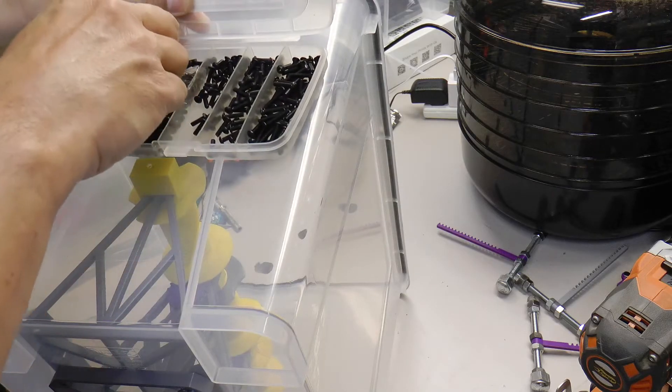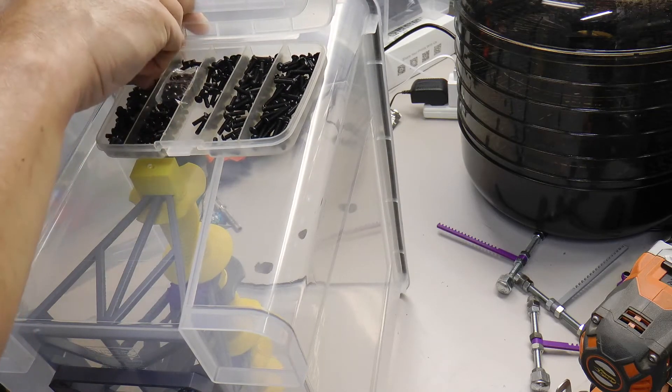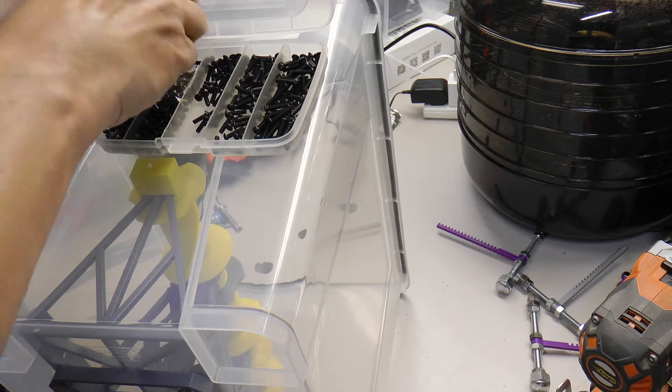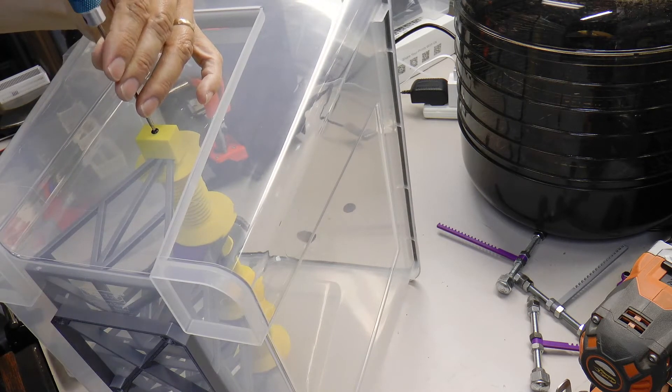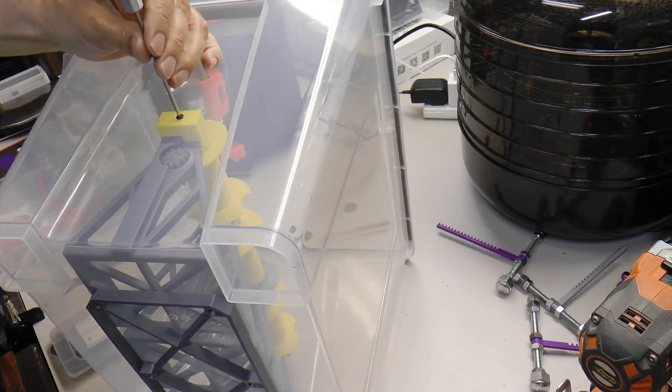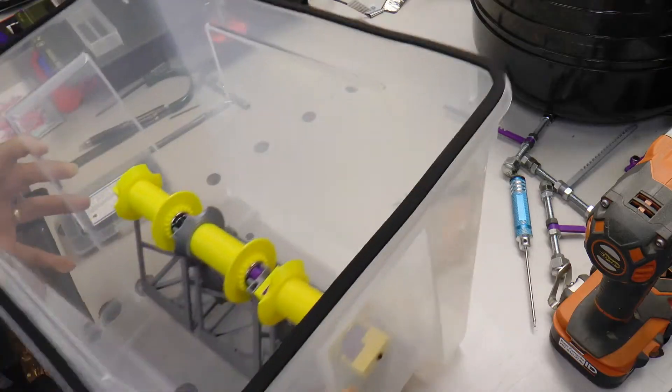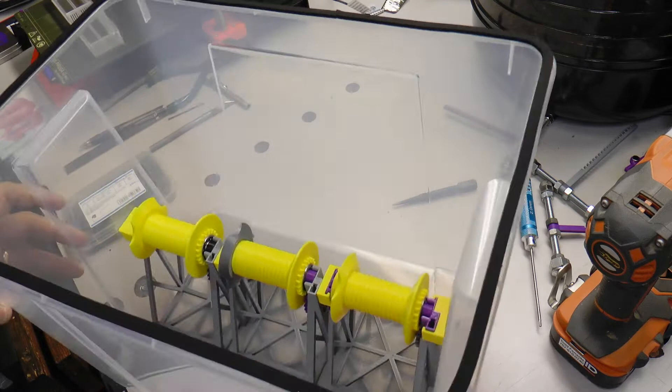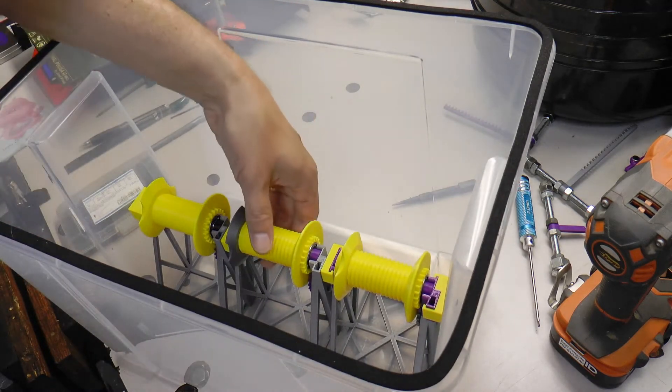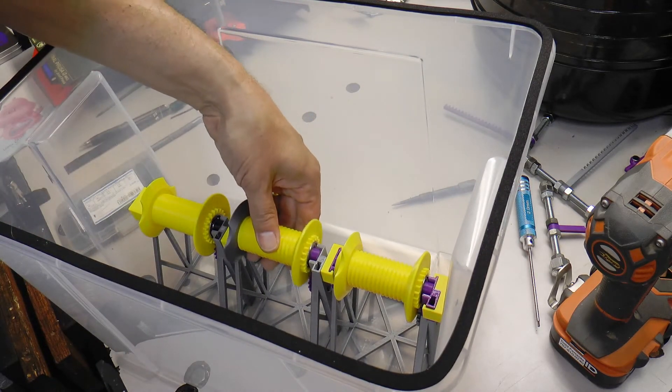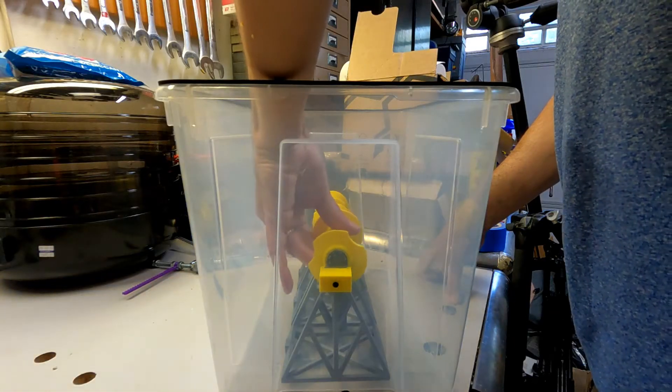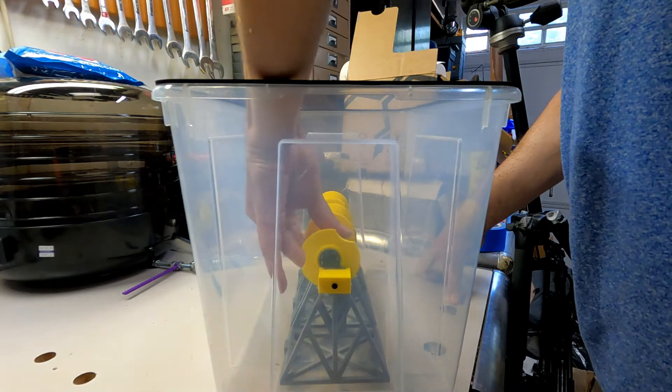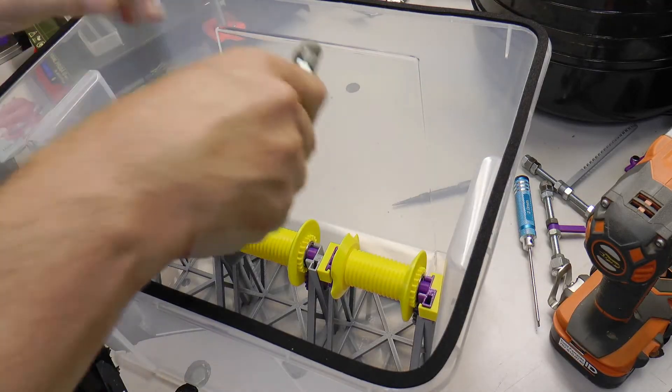And these ones we're going to install with six millimeter screws. With those in place we'll do another test so this should lift in and out fairly easily. Not bad. Now we can put our weights in.